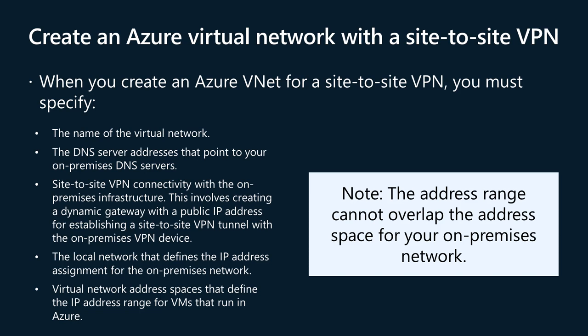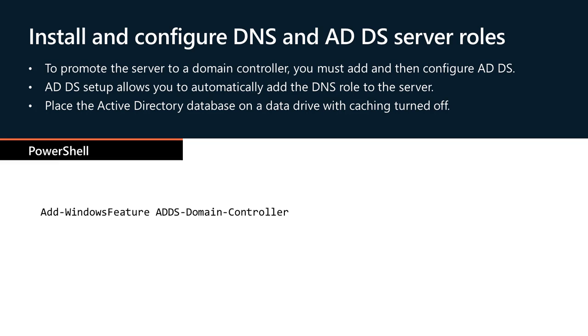You can use ExpressRoute instead of site-to-site VPN for cross-premises connectivity. With ExpressRoute, you can extend your on-premises networks into Azure over a dedicated private connection provided by a connectivity provider, using dedicated lines instead of a public internet connection for faster speeds, more reliability, and lower latency. To promote the server to a domain controller, you must add and configure ADDS. You can add the ADDS role using Add Roles and Features in Server Manager or by using the Windows PowerShell commandlet: Add-WindowsFeature AD-Domain-Services. ADDS setup allows you to automatically add the DNS role, or you can install it later using the PowerShell commandlet: Add-WindowsFeature DNS. Place the Active Directory database on a data drive with caching turned off.